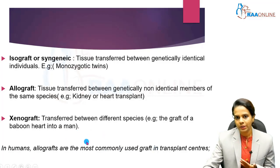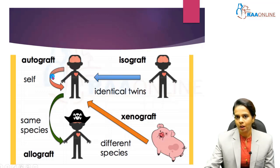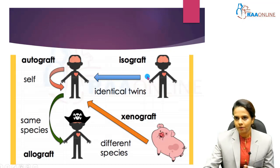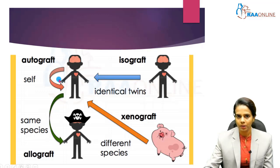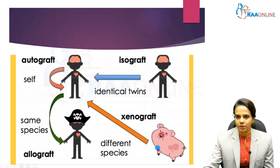This is a pictorial representation showing all types of grafts. In the autograft, tissue is transferred from healthy skin to a burned or diseased area on the same individual. In the isograft, the graft is transferred between two identical twins. In the allograft, tissue transfer takes place between two non-identical individuals of the same species. In the xenograft, transfer takes place between two different species.